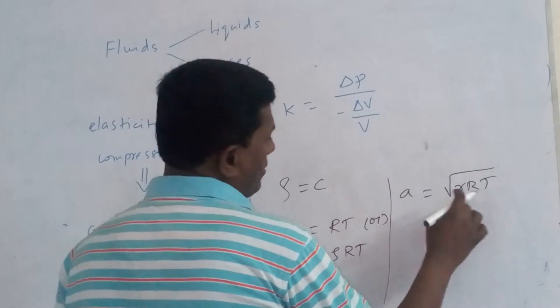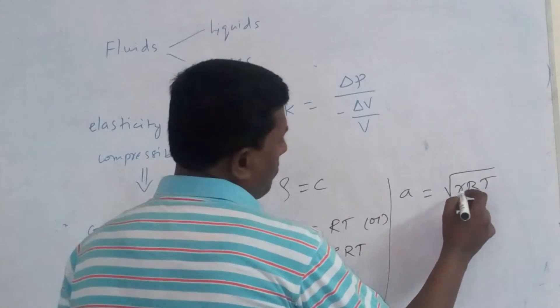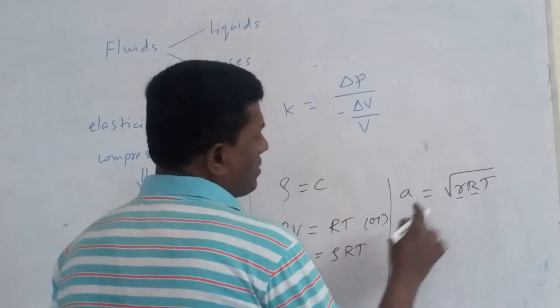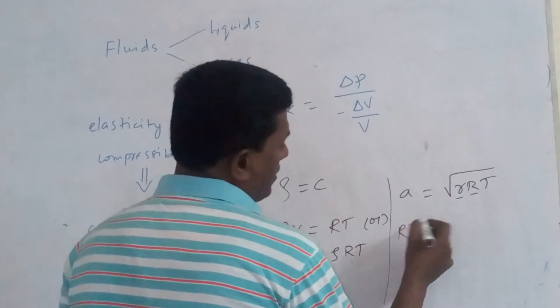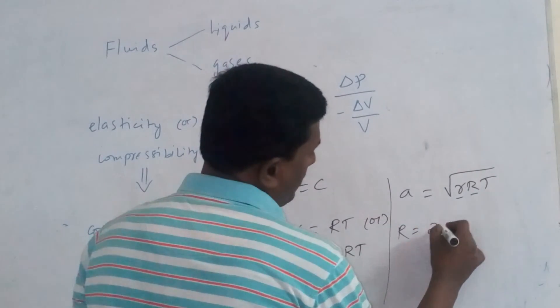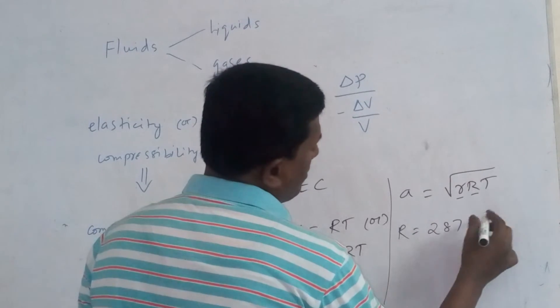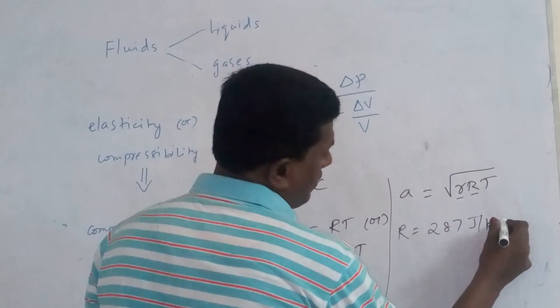This is only the function of temperature. Because this parameter and this parameter both are constant. Whereas this R is the gas constant, the value is nothing but 287 joules per kg Kelvin.